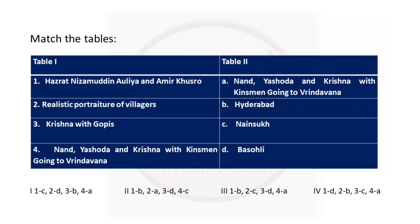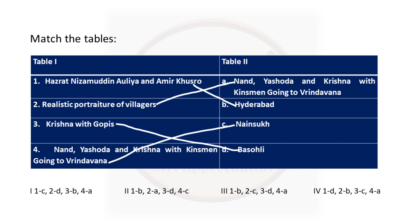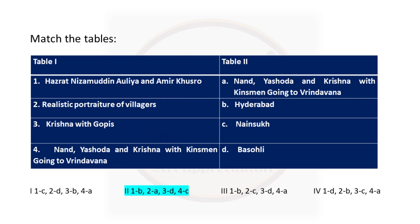One more match-the-tables question. First: Hazrat Nizamuddin Aulia and Amir Khushro is a painting from the Hyderabad sub-school. Second: realistic portraiture of villagers — this is seen in Nandi Yashoda and Krishna with Kinsmen going to Vrindavan, where every face is different and carefully studied. Third: Krishna with Gopis is a painting from the Basoli sub-school. Fourth: Nandi Yashoda and Krishna with Kinsmen going to Vrindavan is a painting by Nain Sukh. So the answers are: 1B, 2A, 3D, and 4C.